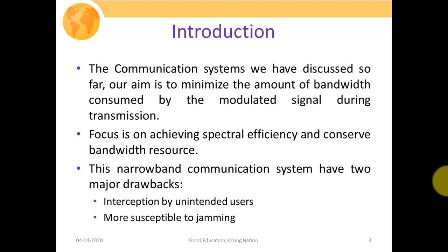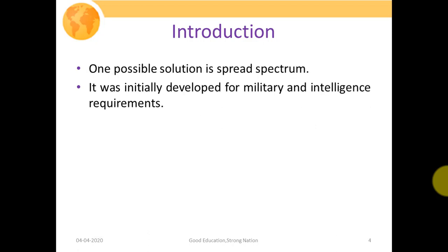By interception by unintended users, we mean that certain users who are not supposed to hear a conversation between two parties will intentionally intercept and fetch information they are not supposed to hear. The second drawback is susceptibility to jamming — meaning that communication becomes inoperational. Jamming is performed with the help of jammers generating a narrowband signal in opposite phases, causing destructive interference at the receiver so that the receiver cannot extract the information signal. One possible solution to these problems is spread spectrum.